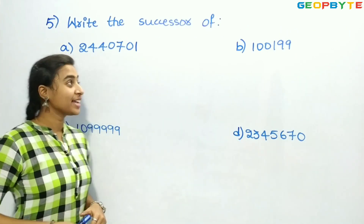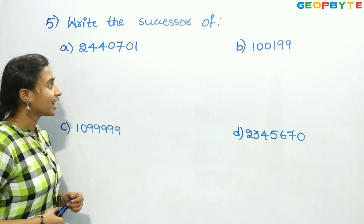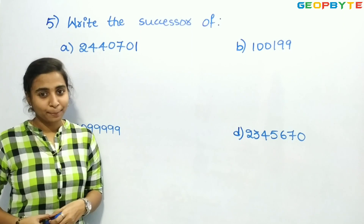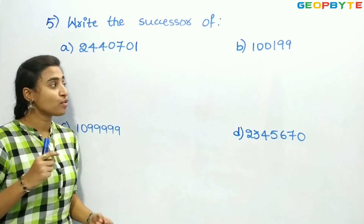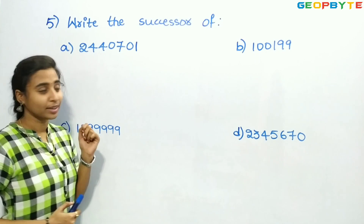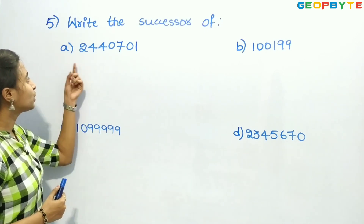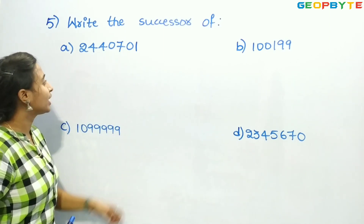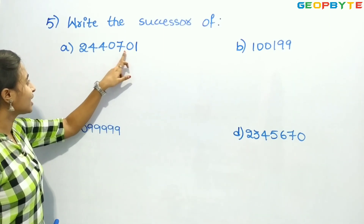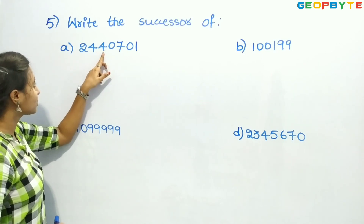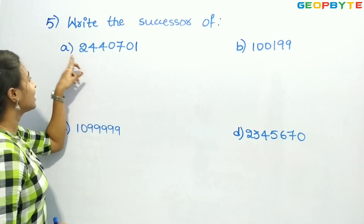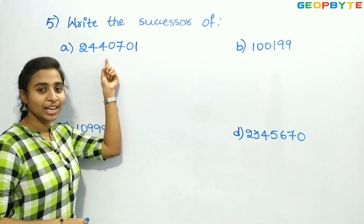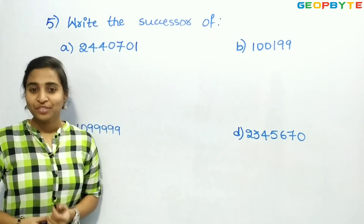Now let us see the 5th question: write the successor of the following numbers. We are given 4 numbers and need to write the successor for each. The first number is 24,40,701. Looking at the place value — 1s, 10s, 100s, 1000s, 10,000s, 1 lakh, 10 lakh — it is 24 lakh 40,701.